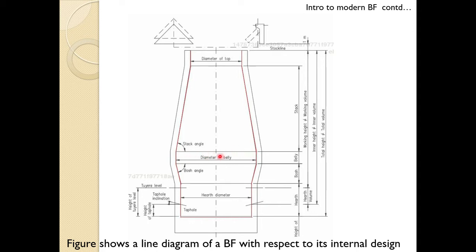In the belly and bosh region, direct reduction and the cohesive zone occur. After that, contraction due to melting and fusion occurs, so the diameter starts decreasing in the bosh region.